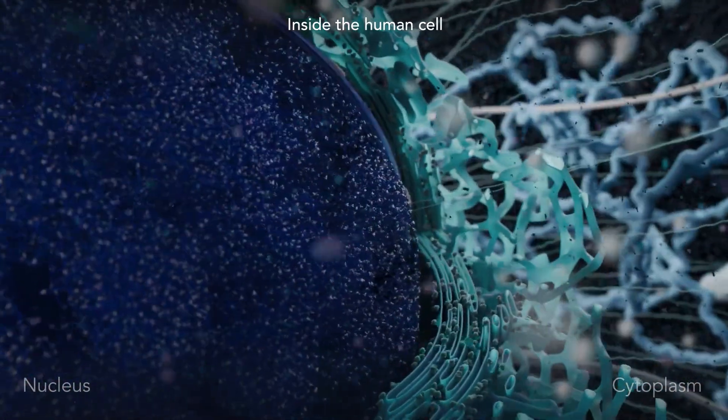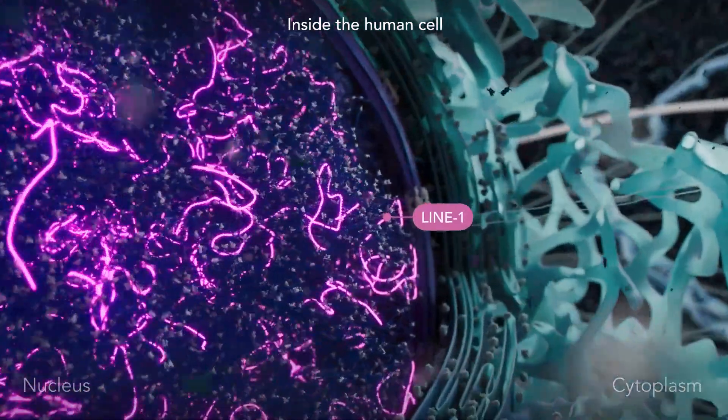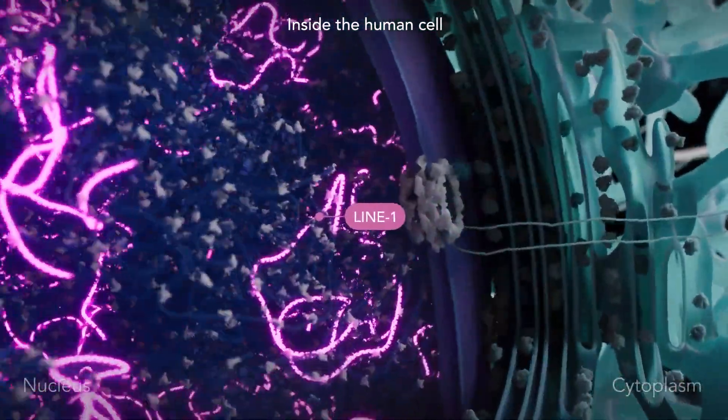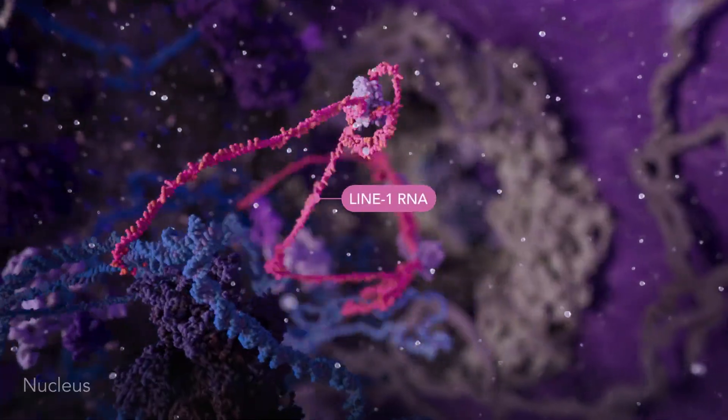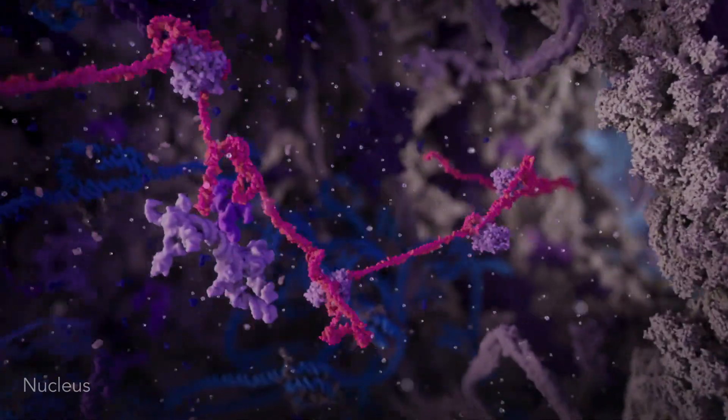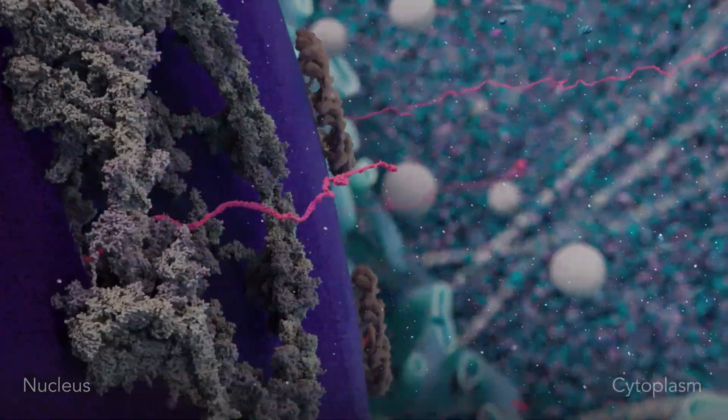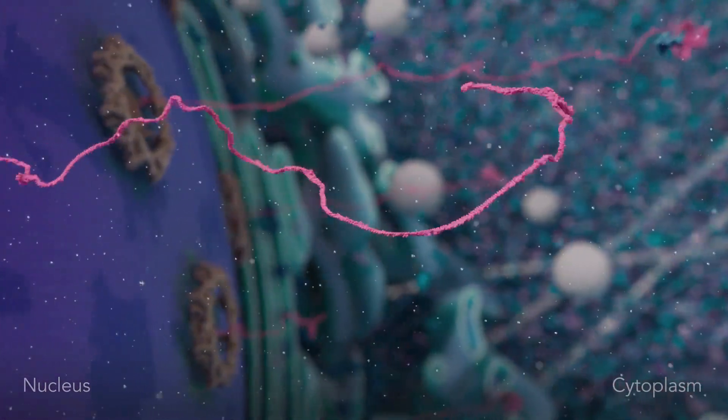The human genome contains approximately half a million copies of a virus-like element known as LINE-1. In certain disease states, LINE-1 escapes repression and generates RNA molecules that migrate to the cytosol.